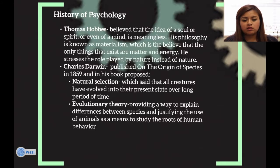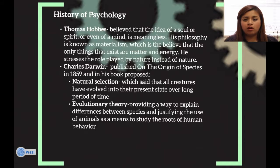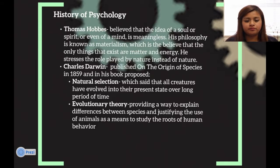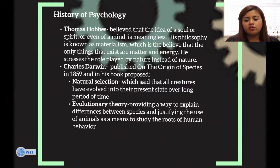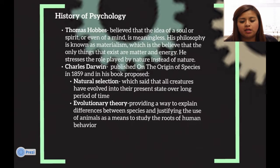Charles Darwin published the Origin of Species, in which he proposed natural selection — that all creatures evolved into the present form over a long period of time. Evolutionary theory provided a way to explain the differences between species and justifying the use of animals as a means to study the roots of human behavior.